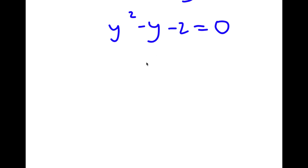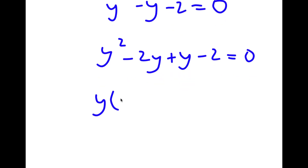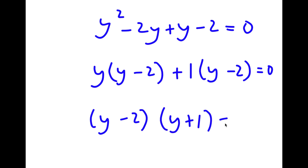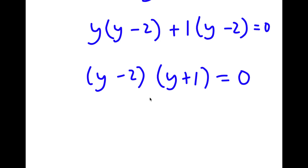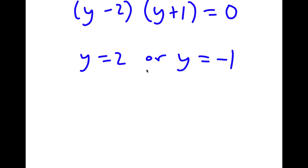To solve y squared minus y minus 2 equals 0, I factor it as y squared minus 2y plus y minus 2, then factor out y to get y times (y minus 2) plus 1 times (y minus 2) equals 0. Factoring out y minus 2 gives (y minus 2)(y plus 1) equals 0, meaning y equals 2 or y equals negative 1. Substituting back x cubed for y gives x cubed equals 2 and x cubed equals negative 1.